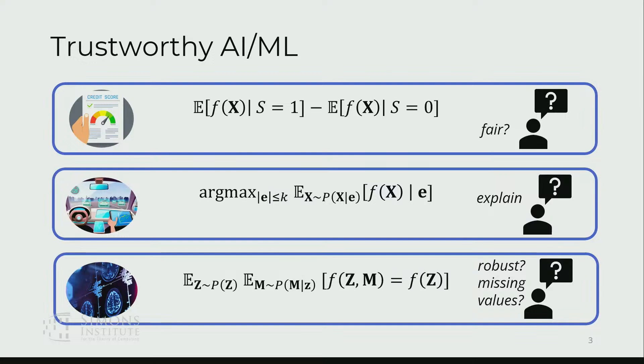My view in my research is that a lot of these questions can all be written as probabilistic questions. So a very simple notion of fairness that people look into is essentially comparing what is the expected or average decision made by an AI model across different demographic groups and comparing if there's a discrepancy in that average outcome.